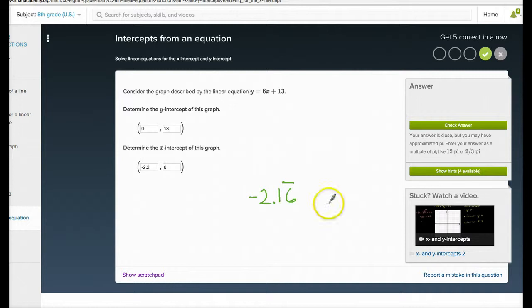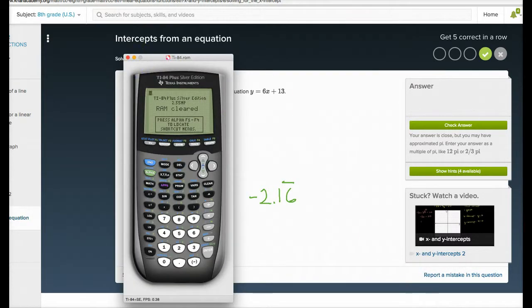It's technically negative 2.16 repeating. Any time you have that repeating, you're dealing with a fraction. So, you might want to go ahead and convert it if you'd prefer to do that.